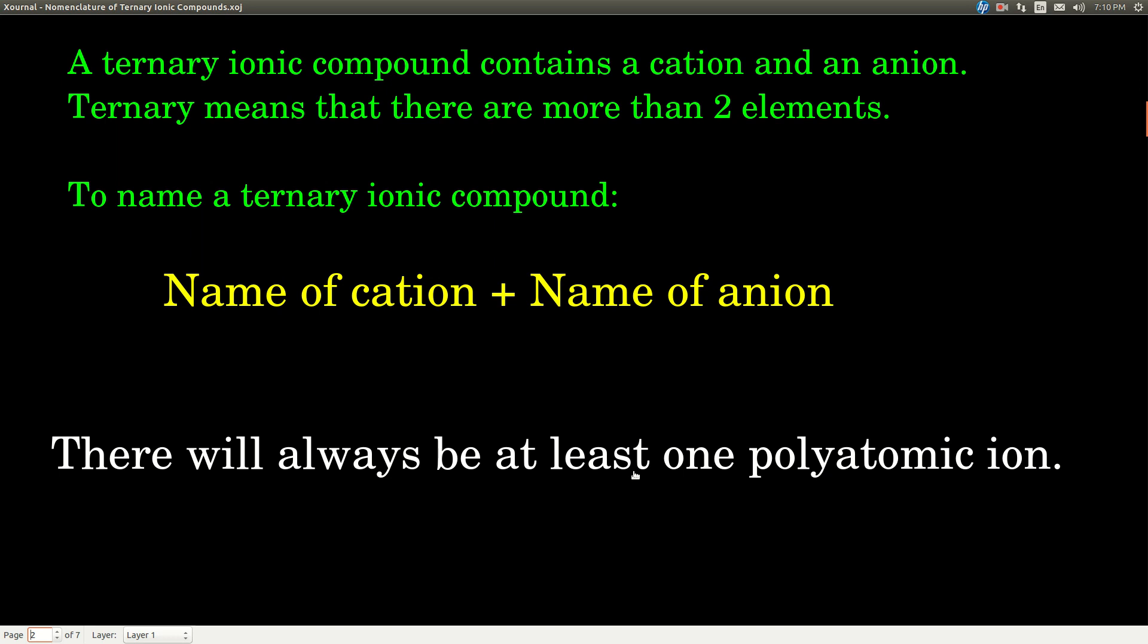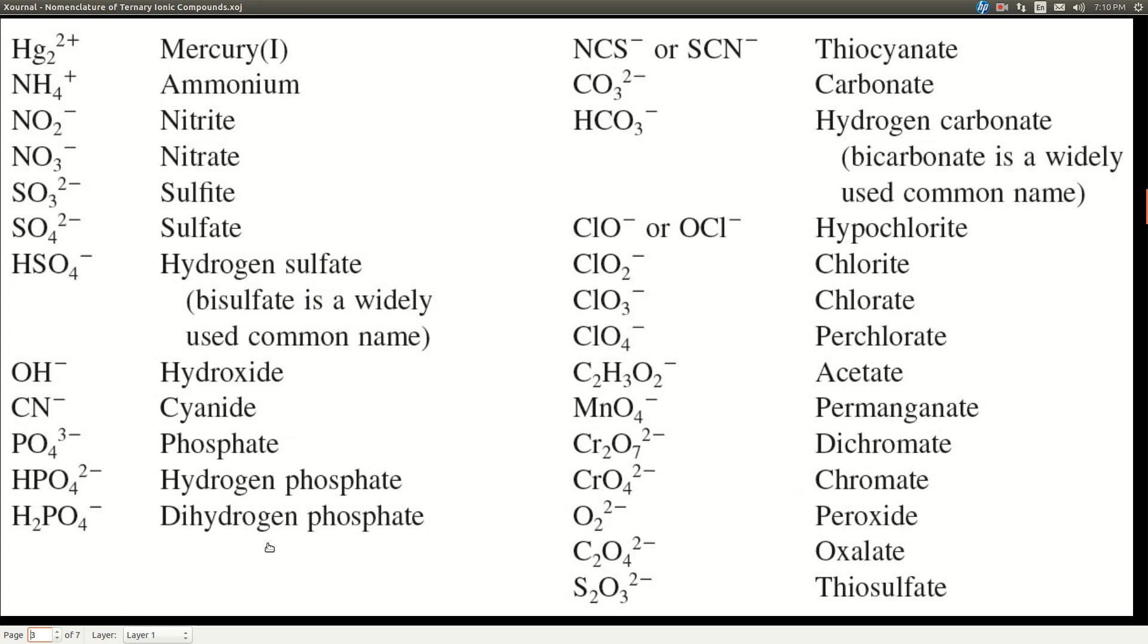The difference between ternary ionic compounds and binary ionic compounds is that in a ternary ionic compound, there will always be at least one of what we call polyatomic ions, at least one polyatomic ion. So what's a polyatomic ion? Fair question. Well, these are polyatomic ions.